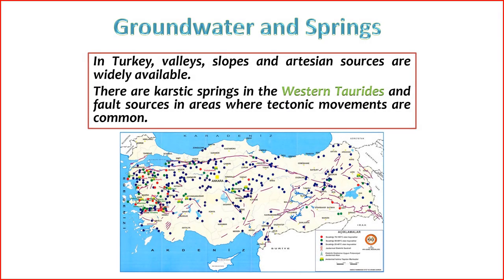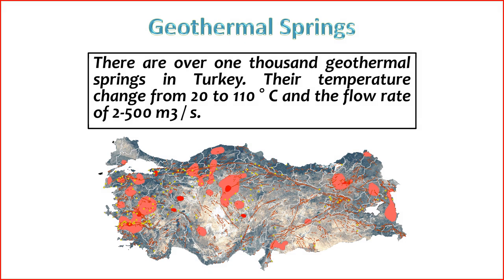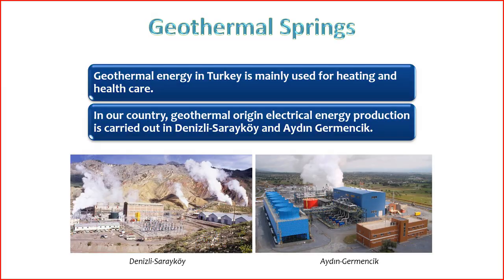In Turkey, valleys, slopes, and artesian sources are prevalent. The western Taurus mountains feature karstic springs, while areas experiencing frequent tectonic movements are characterized by fault sources. There are over 1,000 geothermal springs in Turkey, with temperatures ranging from 20 to 110 degrees Celsius and flow rates of 200 to 500 cubic meters per second. Turkey has significant geothermal energy potential, thanks to its location in a seismically active region with numerous geothermal resources. The country is actively harnessing this potential for electricity generation and various direct uses.